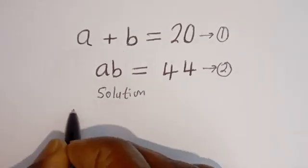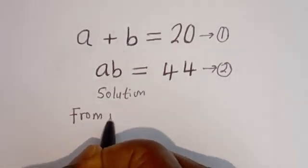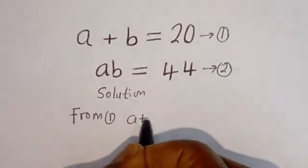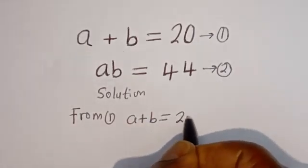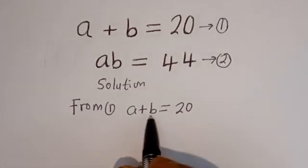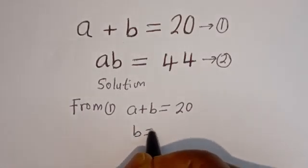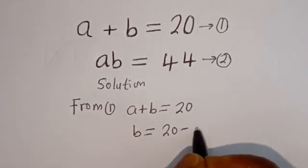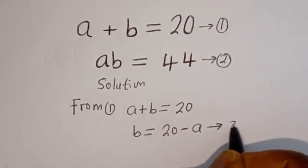Then from equation 1, A plus B is equal to 20. Let's make B the subject of the formula: B is equal to 20 minus A.